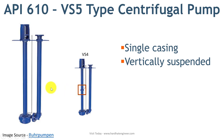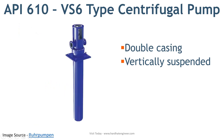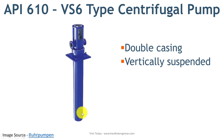The next is VS6 type pump. VS6 has a double casing and is also known as a can pump due to its design. It is a vertically suspended pump with discharge through the pump column. This design is used to increase NPSH in some cases by installing the pump underground.